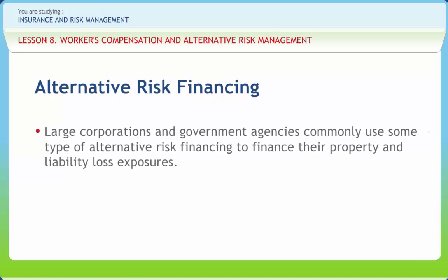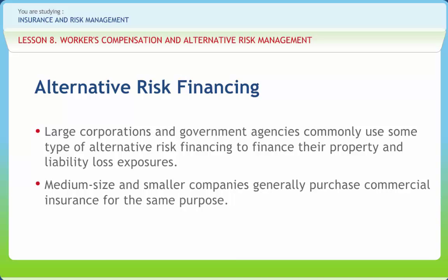Large corporations and government agencies commonly use some type of alternative risk financing to finance their property and liability loss exposures. Medium size and smaller companies generally purchase commercial insurance for the same purpose. Alternative risk financing, however, is not just for the big multinational companies. Many other firms can enjoy some of the benefits of alternative risk financing, such as improved cash flow and a lower total cost of risk. Risk financing is the use of insurance and other techniques to pay for loss obligations. Alternative risk financing is the self-assumption of risk combined with insurance to finance an organization's property and liability losses.